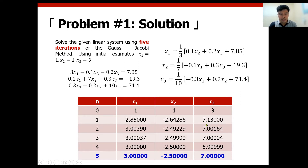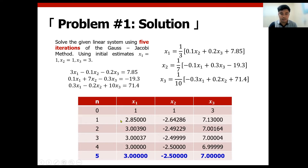The concept under Gauss-Seidel is that when you are done with x1, you already know what is the value of x1, and then you need to solve for x2, as shown here. For the first iteration, we solve for x1 by substituting the initial estimates of x2 and x3, which become 1 and 3. Then solving for x2, since we already solved for x1, the value of x1 is 2.85 — use that 2.85 already. You don't need to wait for the first iteration, second iteration, and so on to be complete per row. When you already done computing for x1, just substitute that one. That's the concept.